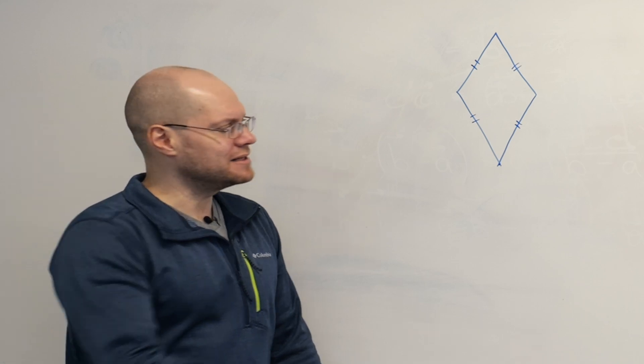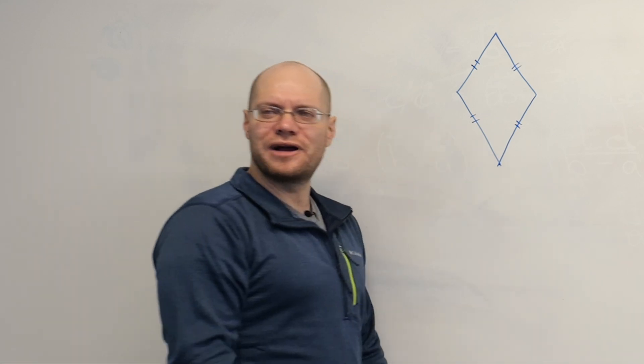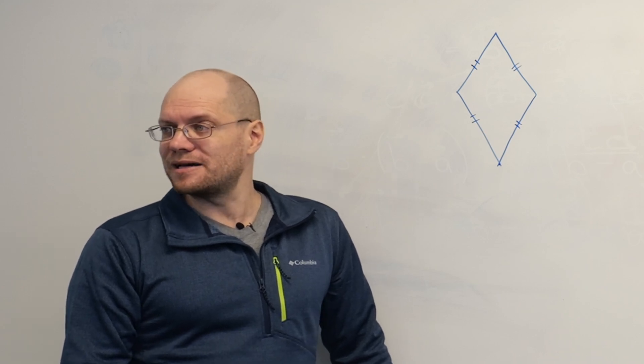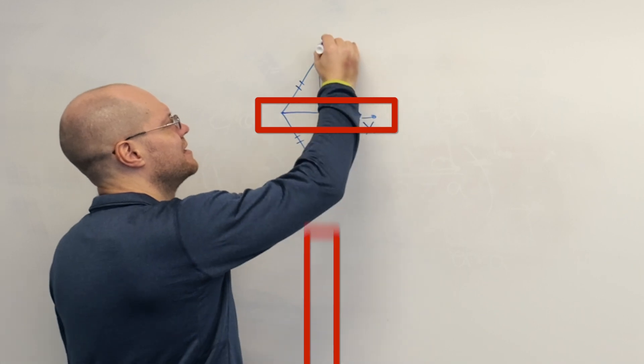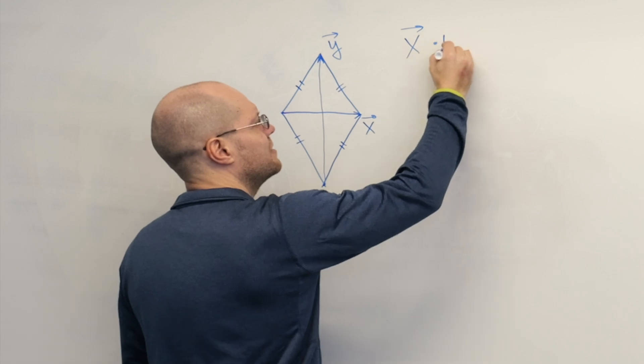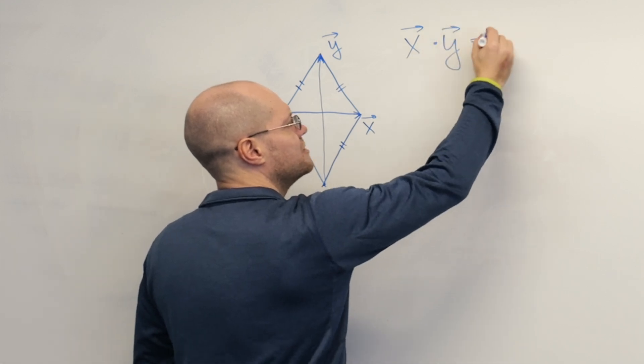Statement. Its diagonals intersect at a right angle. Prove that that's the case using vector methods. This is x and this is y. The idea is to show that x dotted with y equals zero.